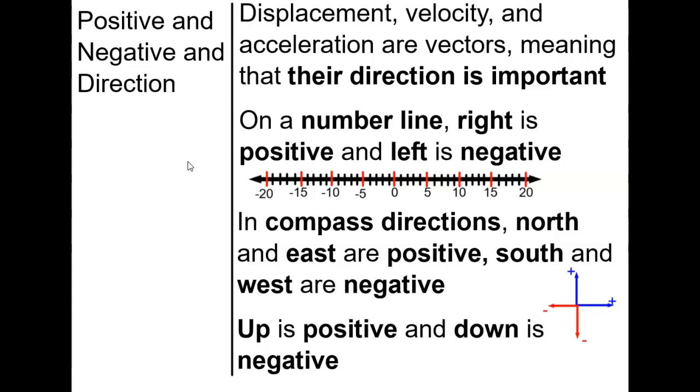So displacement, velocity, and acceleration on a number line: right is considered positive direction, and left is considered the negative direction. So if you have an object moving relative to a number line, that would be what you would see. As it moves more to the right, it's more positive, and as it moves more to the left, it's negative.